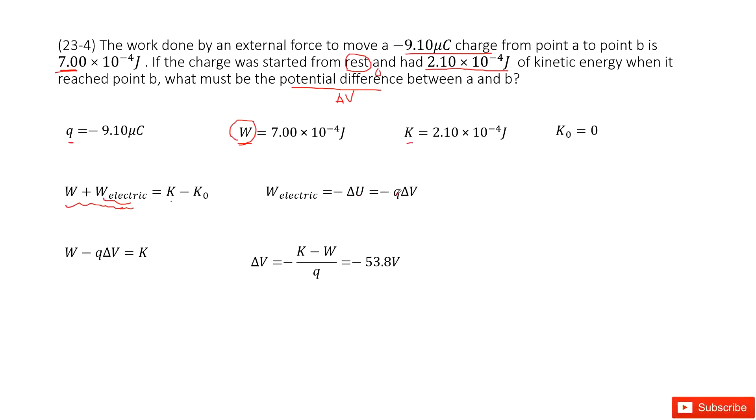And this electric energy can be written as Q times ΔV. So in this case, we input this electric work as negative Q times ΔV equal to K, because K₀ is zero. So from this one comes to that one. We just replace W electric as negative Q ΔV.